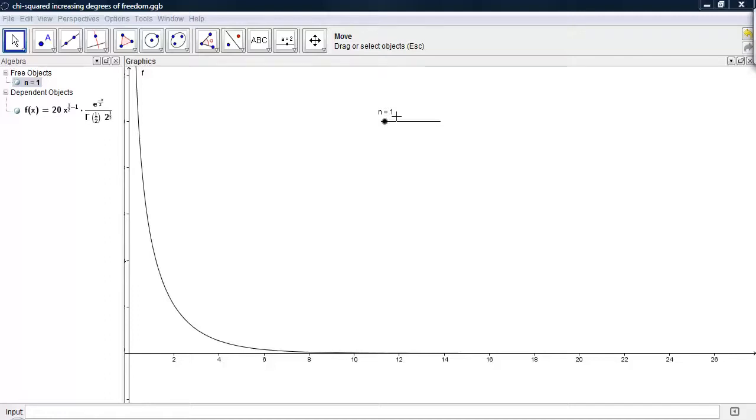Now, at this moment, I have the degrees of freedom set to be 1, and we see that we have a chi-square curve graphed here.